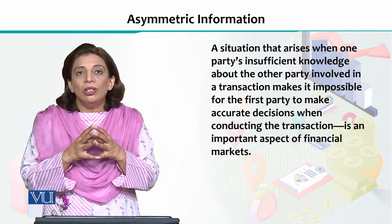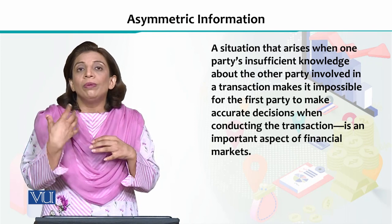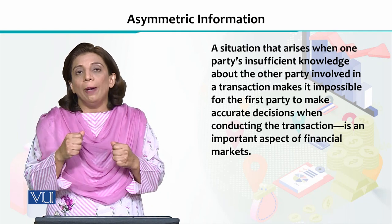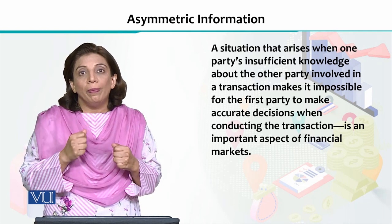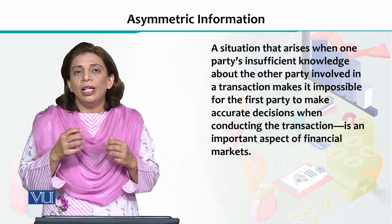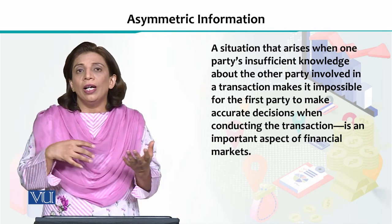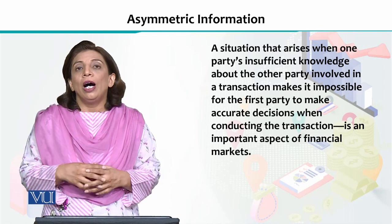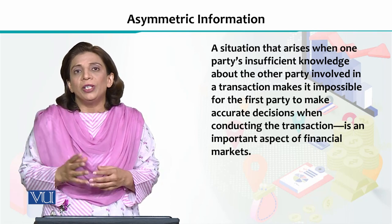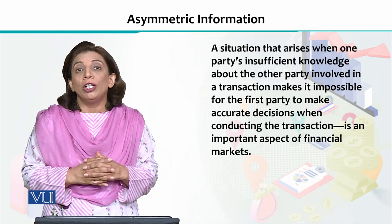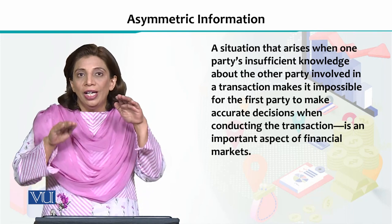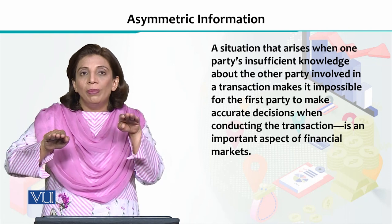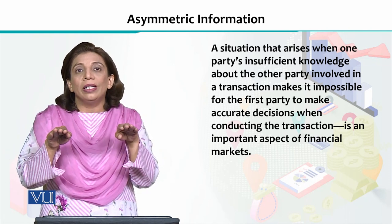Asymmetric information causes a lot of problems. It means that you have to go to the broker, take subscriptions, read books and literature, look at annual reports, and visit different companies' websites to try to gather information. Asymmetric information can be minimized, but you cannot perfectly eliminate it.